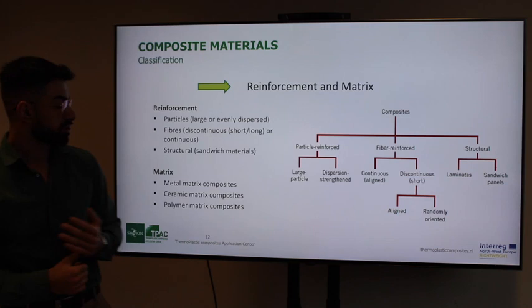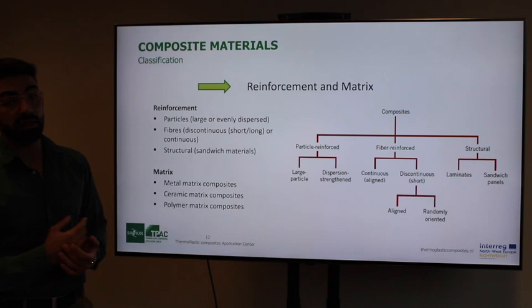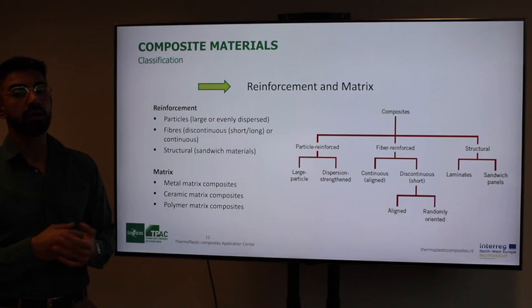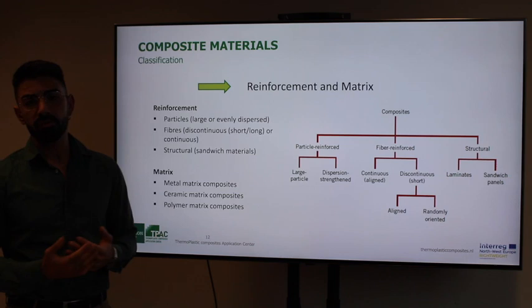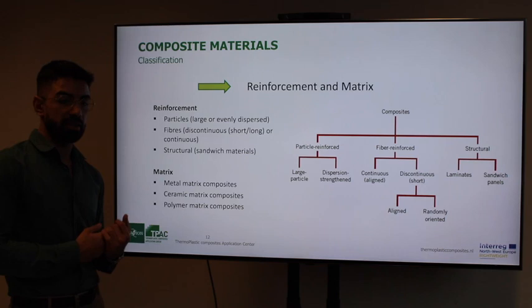Composites are named according to both the type of fibers and the type of matrix. We can refer to them as metal matrix composites when there is a metal matrix, ceramic matrix composites when properties like toughness are required and the matrix is a ceramic material, and polymer matrix composites, which we will see in more detail in the next section.